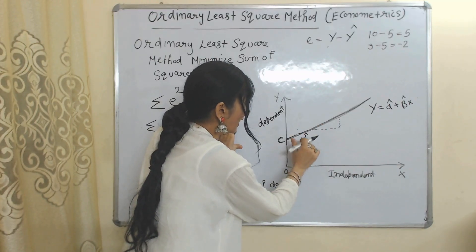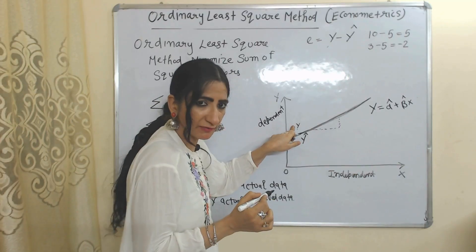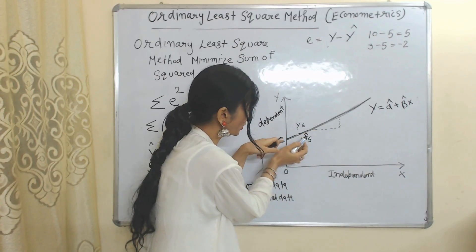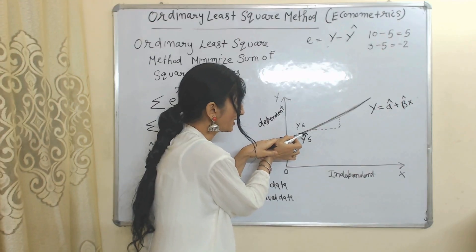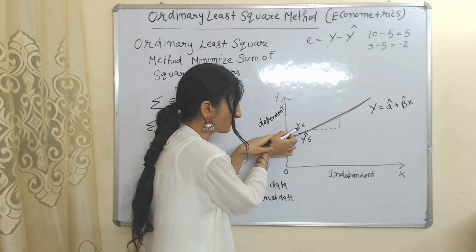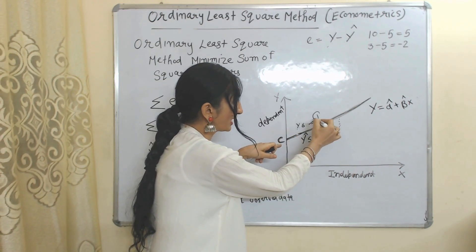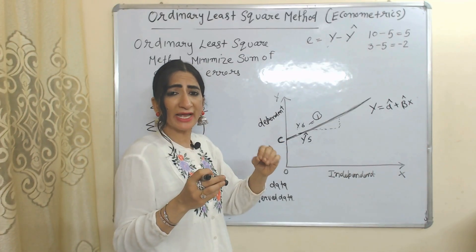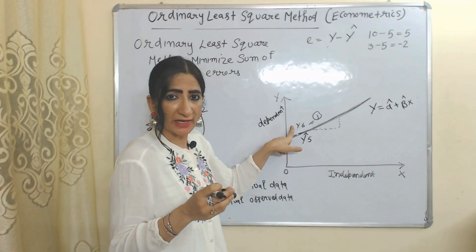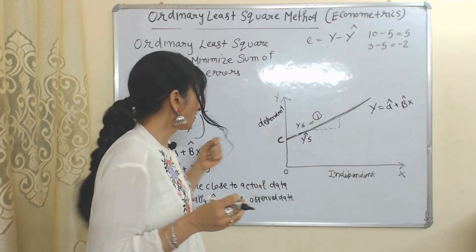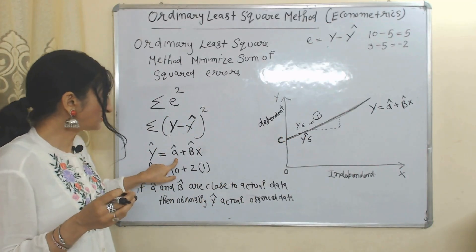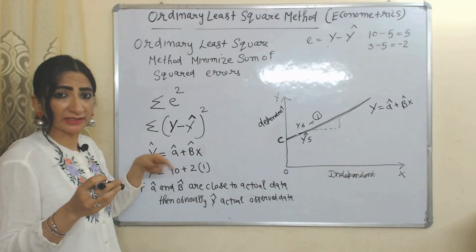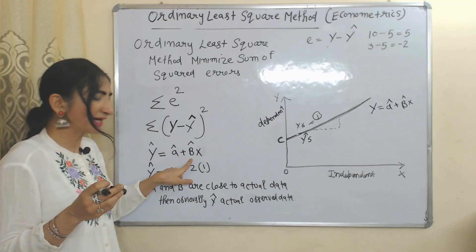Suppose the value of Y-hat is very close to the actual observed value — for example, Y-hat is 5 and the actual observed value is 6. Here you can see the value of Y-hat is very close to the actual observed value, so our error will be minimum. In short, when Y-hat is close to the actual observed value, the error is minimized, and Y-hat mainly depends on alpha-hat and beta-hat. Ordinary Least Squares helps find the optimum values of alpha-hat and beta-hat.